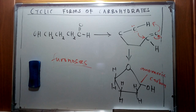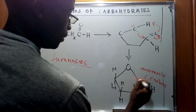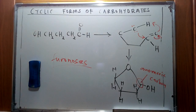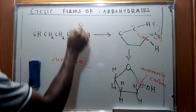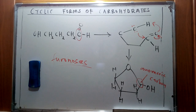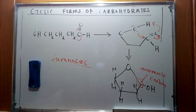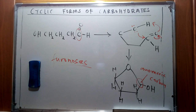Furanoses form the five-membered rings while pyranoses form the six-membered rings. The anomeric carbon that I've illustrated on the board — which takes part in this specific rearrangement — is going to be referred to as the anomeric carbon.